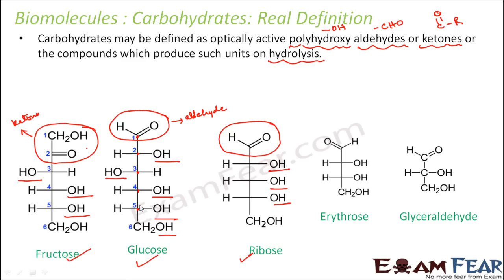If the polyhydroxy aldehyde or ketone groups are not present directly, then those compounds on hydrolysis should produce compounds which are polyhydroxy aldehydes or ketones. So polyhydroxy aldehyde or ketone is the key definition for carbohydrates. There are other examples as well, like erythrose or glyceraldehyde — the name itself says it has aldehyde, and it also has multiple hydroxy groups. Glyceraldehyde is the smallest carbohydrate, as it has the smallest number of carbon atoms.